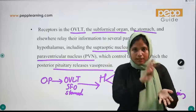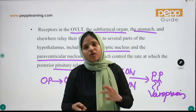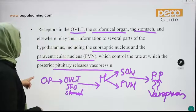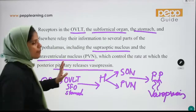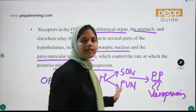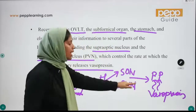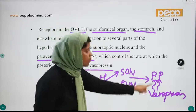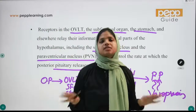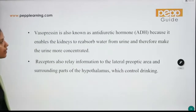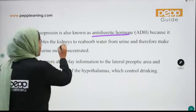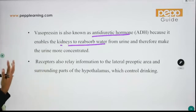In the osmotic thirst case: sodium intake raises osmotic pressure. This triggers the brain via the third ventricle — specifically OVLT, subfornical organs, and peripheral receptors in the stomach — to the hypothalamus, then the supraoptic and paraventricular nuclei, and finally the posterior pituitary releases vasopressin. Vasopressin acts as ADH, causing the kidneys to reabsorb water.